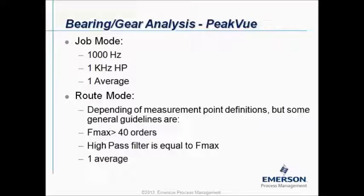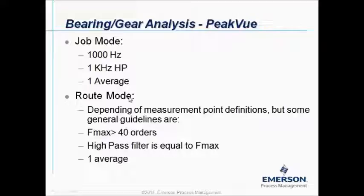Peak view measurements can be measured in the job mode or in the root mode. If you measure peak view data in the job mode and you're using the default setting, it will collect a spectrum up to 1000 Hz with a high pass filter of 1000 Hz and one average. If you collect peak view data starting from the root mode, it will depend on the measurement point definitions, but here are a couple of general guidelines. It's recommended to use an Fmax with at least 40 orders as an Fmax or higher.